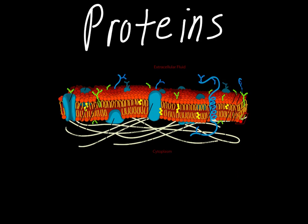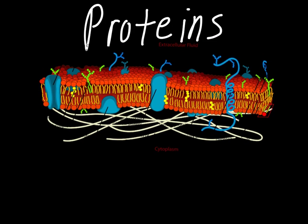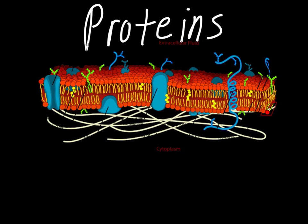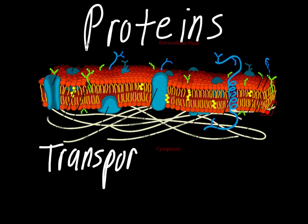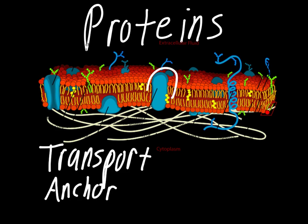The next part to talk about are the proteins. There are two main types. The first ones almost look like a little tunnel — some proteins are important because they're for transport, which is partly what allows things in and out of the cell. The other ones just act like an anchor point; they have the carbohydrates attached to them. Those are honestly the two main functions of the proteins. There are different ways they let certain things in and out of the cell. Also remember that proteins are the largest of all the different components inside the membrane.